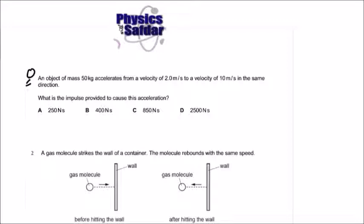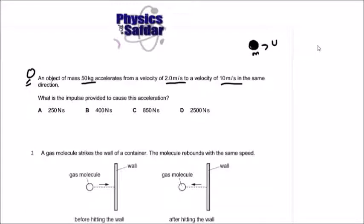First of all, underline the information. The mass of the object is 50 kilograms, the initial velocity is 2 meters per second, and the final velocity is 10 meters per second. The object was moving with velocity u, and then the velocity changed from u to v. Mass does not change, so mass remains the same. We need to calculate the impulse.